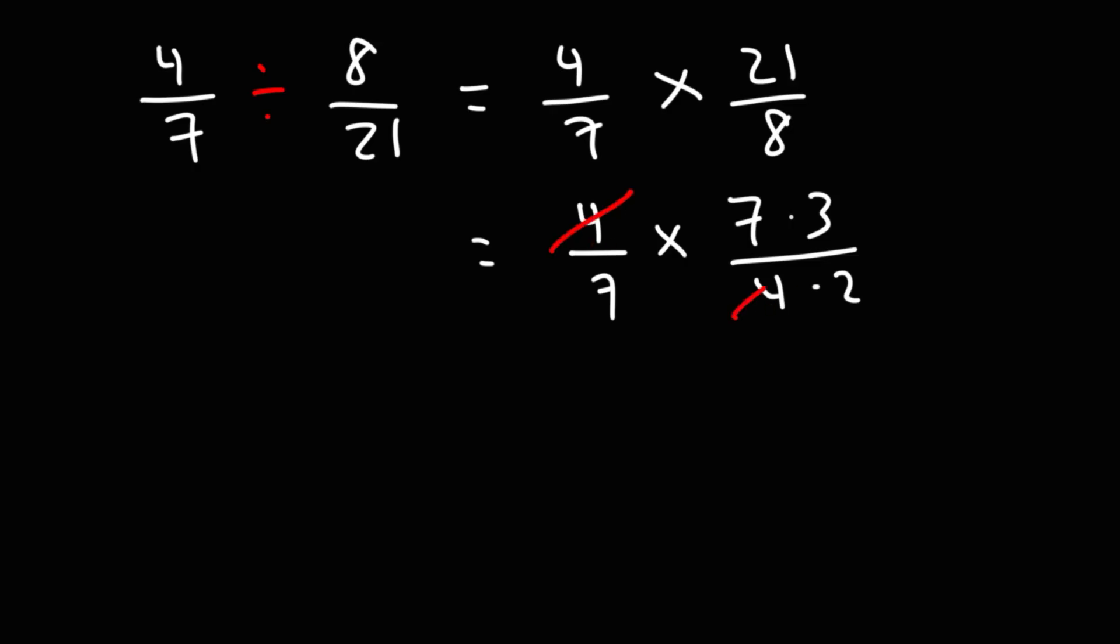So notice that we could cancel a 4 and we could cancel a 7. And what we have left over is 3 over 2, which is our answer. It saves us time from dealing with 84 and trying to break that down.